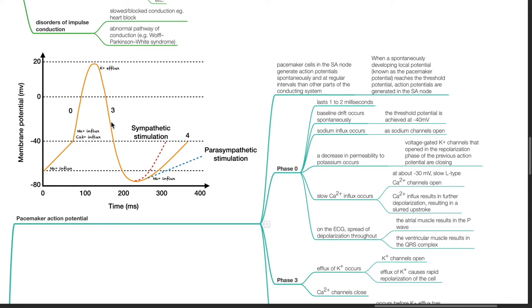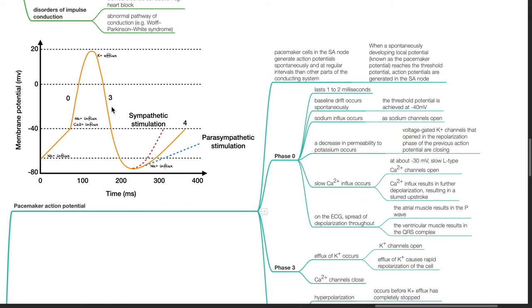During phase 3, efflux of potassium occurs as potassium channels open. Efflux of potassium causes rapid repolarization of the cell. Calcium channels close during phase 3.